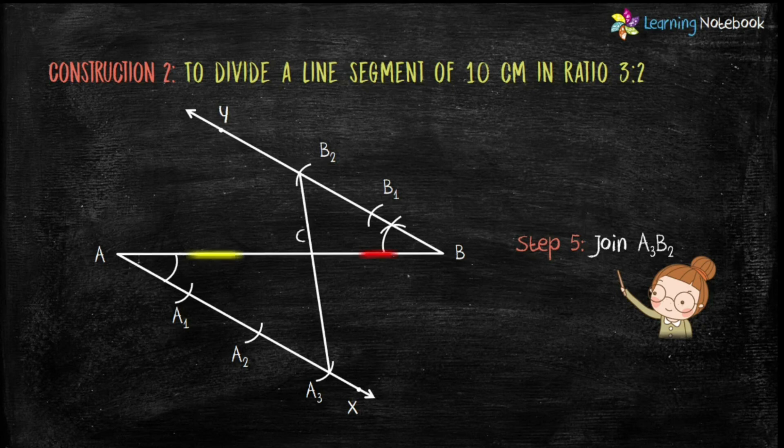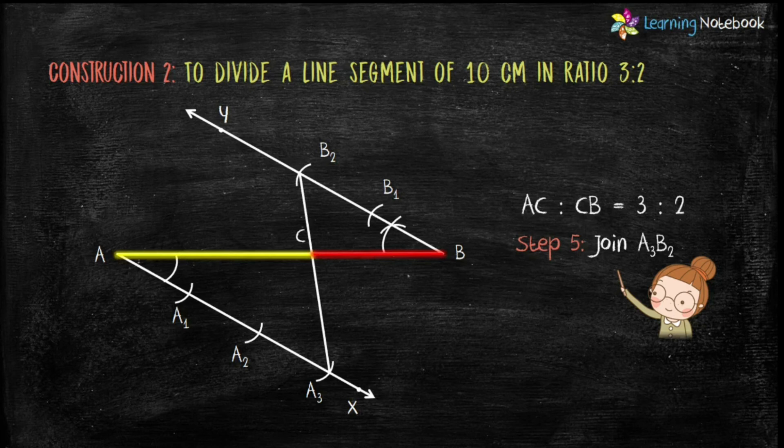Now students, AC is to CB equals to 3 is to 2.